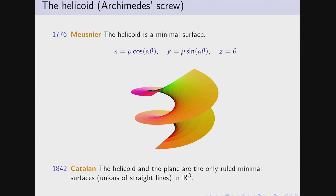Here is another picture of a minimal surface called the helicoid. You take a line in the plane, rotate it, and simultaneously lift it at a constant speed — it's essentially a screw. It was proved by Catalan in 1842 that the helicoid and the plane are the only ruled minimal surfaces, meaning they are unions of straight lines.